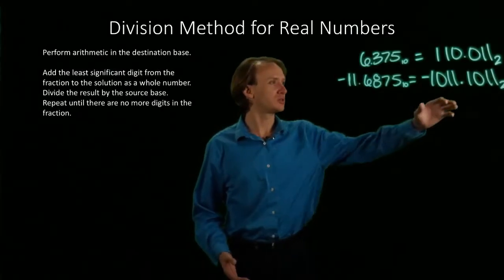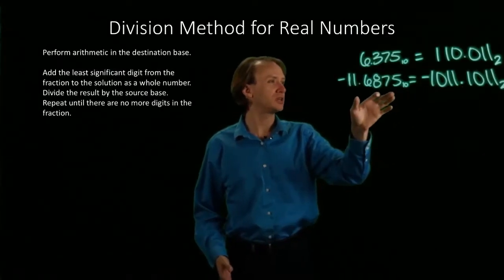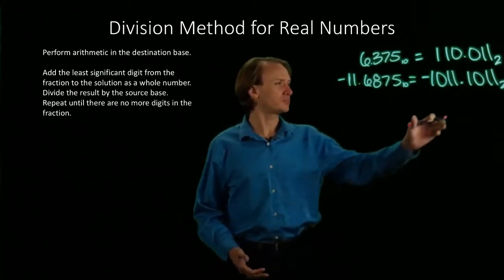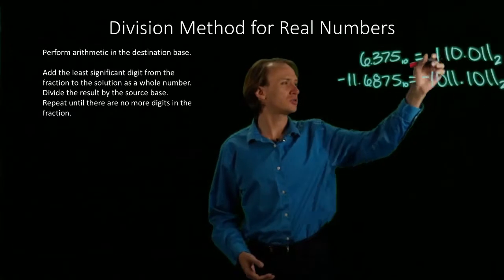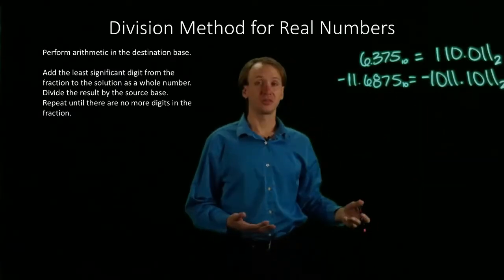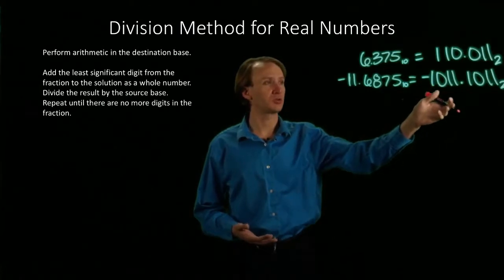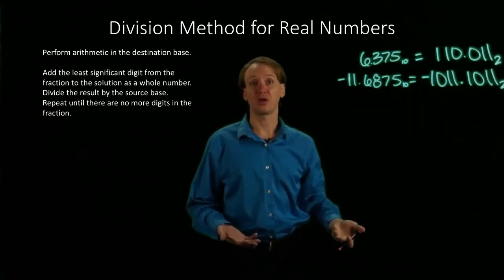In the previous example we converted from binary to decimal using the division method. This time I'm going to convert these binary numbers into octal and hexadecimal. Then we'll use the division method to convert those octal and hexadecimal numbers into decimal and see how that works as well.